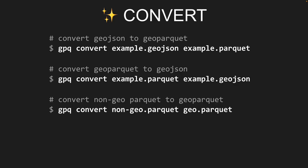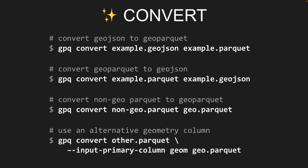You can take a Parquet file that doesn't conform with the GeoParquet specification and run it through gpq convert — taking a non-GeoParquet file and outputting a GeoParquet file. This adds the geo-specific key-value metadata. It can also transform well-known text geometries into well-known binary to conform with the spec. You can supply an input-primary-column flag to specify a different column as your primary geometry column, and control row group size and compression.